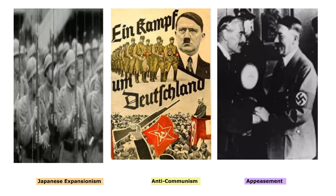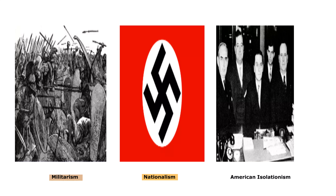Nazi Germany and Imperial Japan were strongly anti-communist, viewing the spread of communism as a threat to their ideologies and expansionist ambitions. Adolf Hitler's Nazi regime perceived the Soviet Union as an ideological and territorial rival. In the face of German and Italian aggression, some western powers pursued a policy of appeasement, hoping to avoid another large-scale conflict. This approach, particularly prominent in Britain and France, allowed Hitler to annex Austria. In response to economic hardships and the desire for territorial expansion, Germany, Italy, and Japan significantly increased their military build-up, contributing to an arms race.